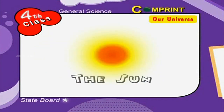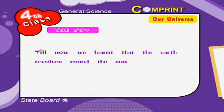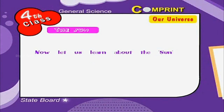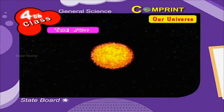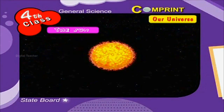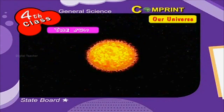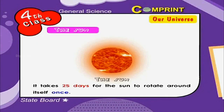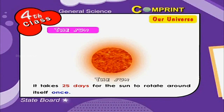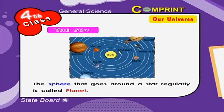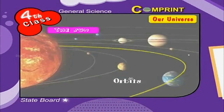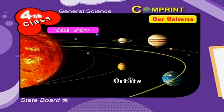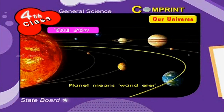Now let us learn about the Sun. The Sun is our nearest star — it gives us heat and light. The Sun is a huge ball of fire. It rotates around itself, and it takes 25 days for the Sun to rotate around itself once. A sphere that goes around a star regularly is called a planet. Planet means a wanderer.